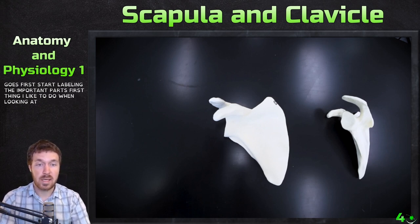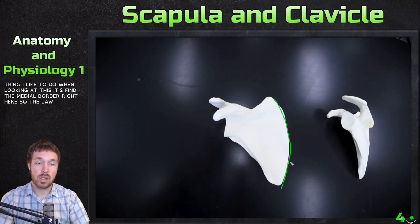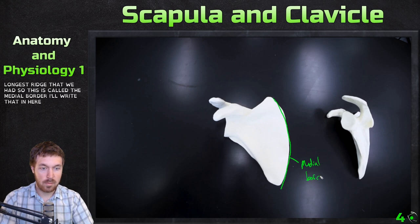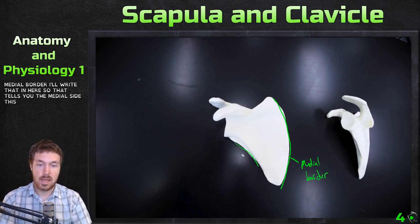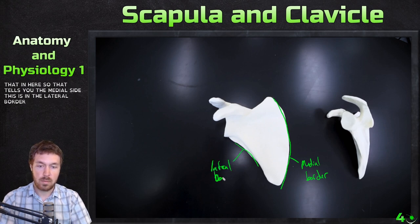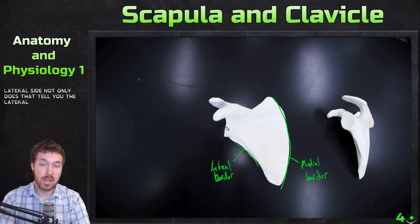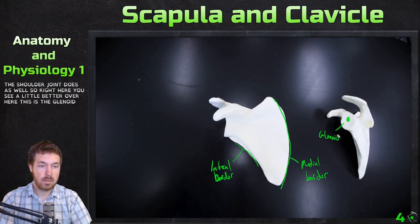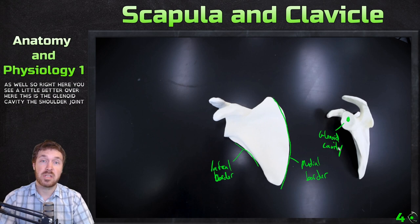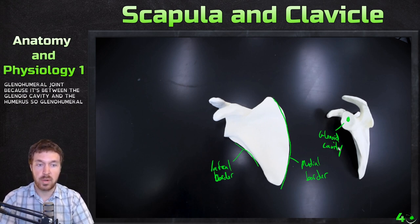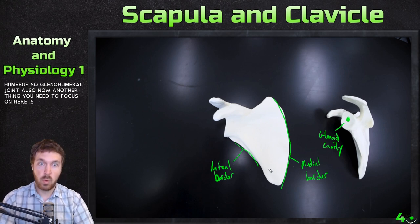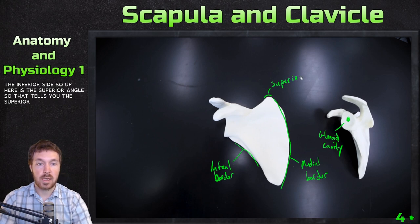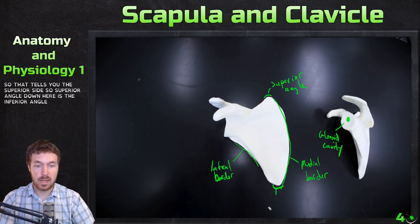The first thing I like to do when looking at the scapula is find the medial border — the longest ridge we have. That tells you the medial side. This is then the lateral border, which tells you the lateral side. The shoulder joint is also on the lateral side — you can see the glenoid cavity right here. The shoulder joint is called the glenohumeral joint because it's between the glenoid cavity and the humerus. Up here is the superior angle, telling you the superior side, and down here is the inferior angle.